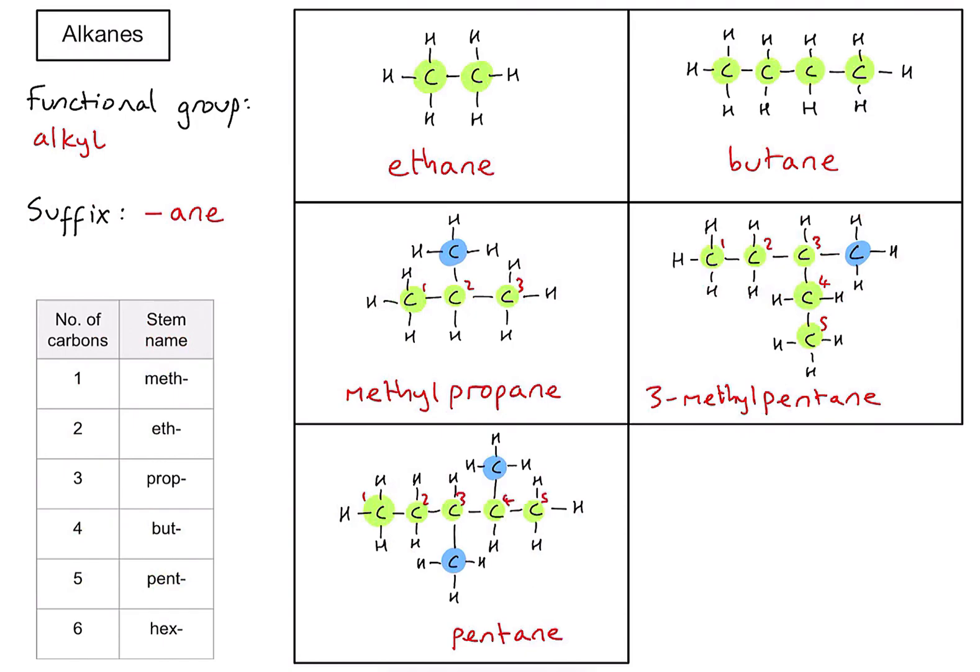If I number my carbons from left to right one, two, three, four, five, that would put the methyl groups on carbon number three and four. However, we always want to name our compounds so that any groups sticking off the side or functional groups are as close to the first carbon as possible, meaning the numbers I include in my name will be as low as possible.